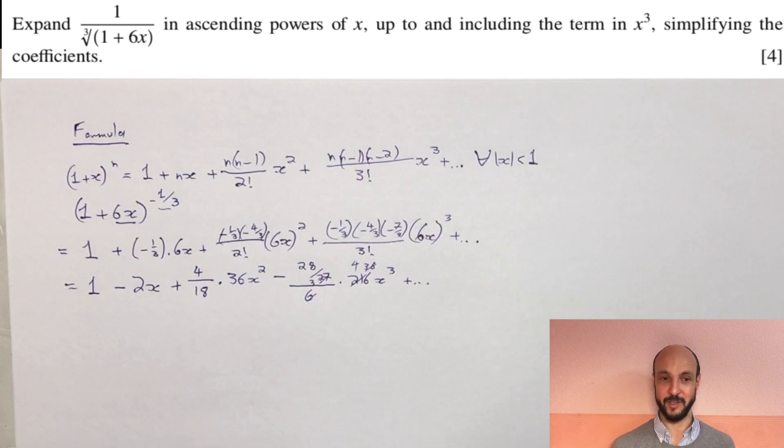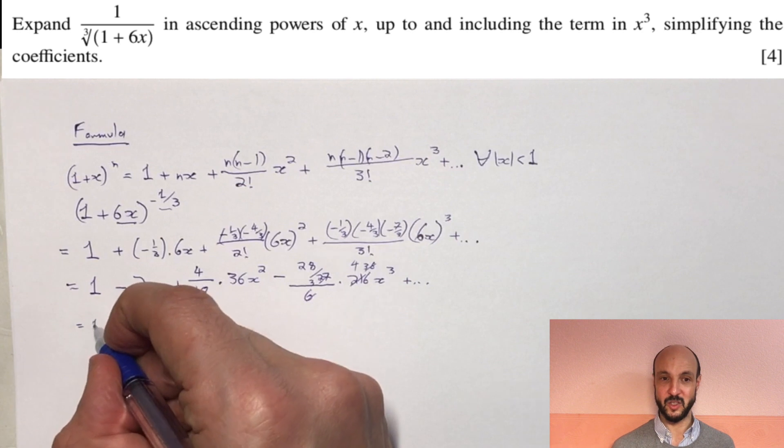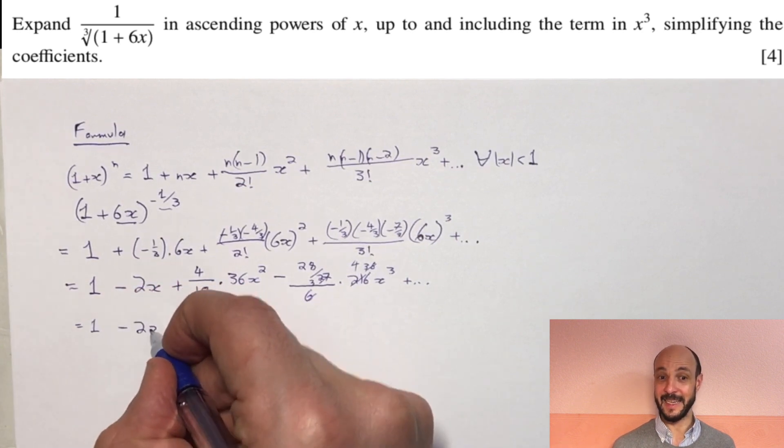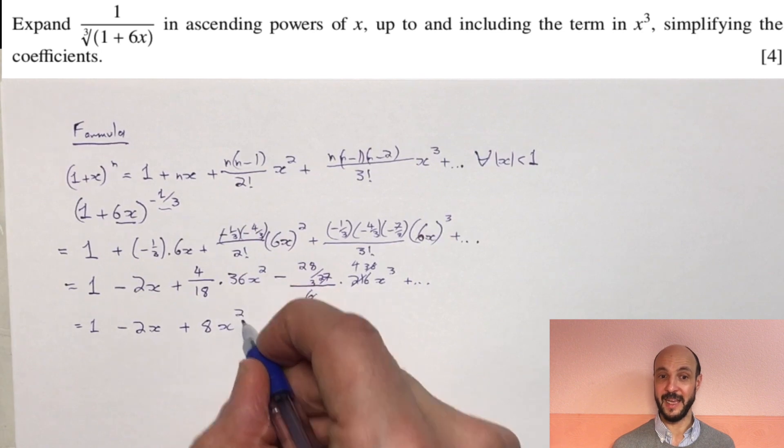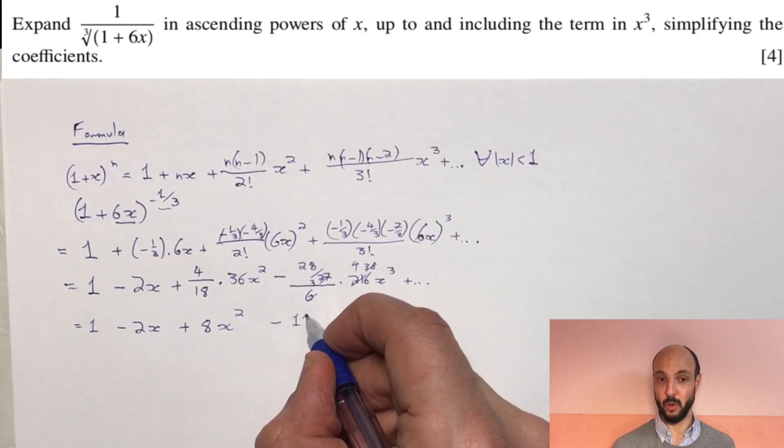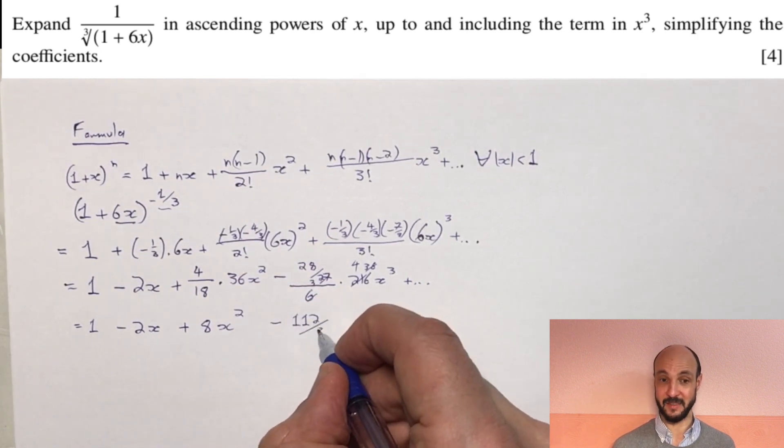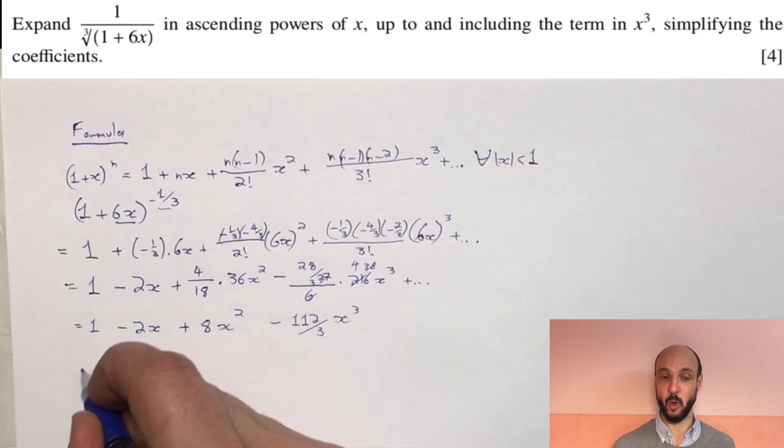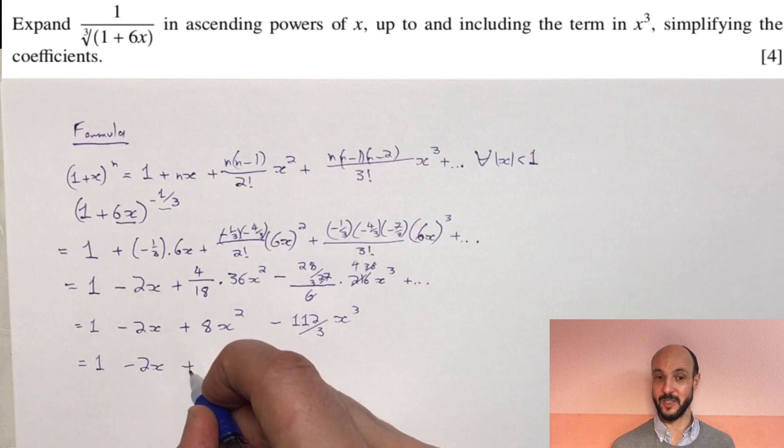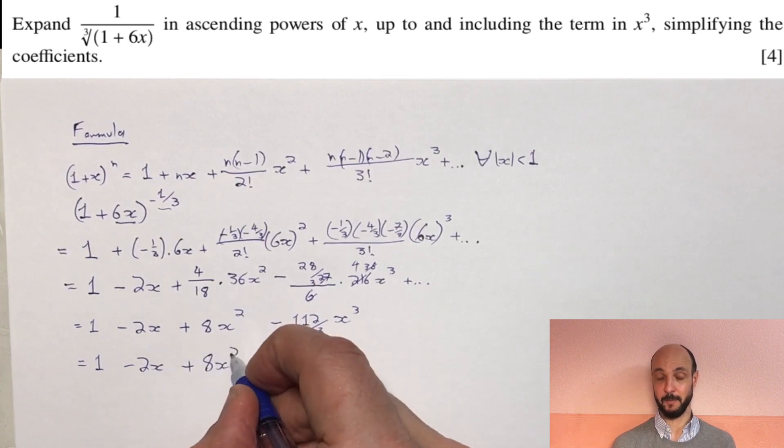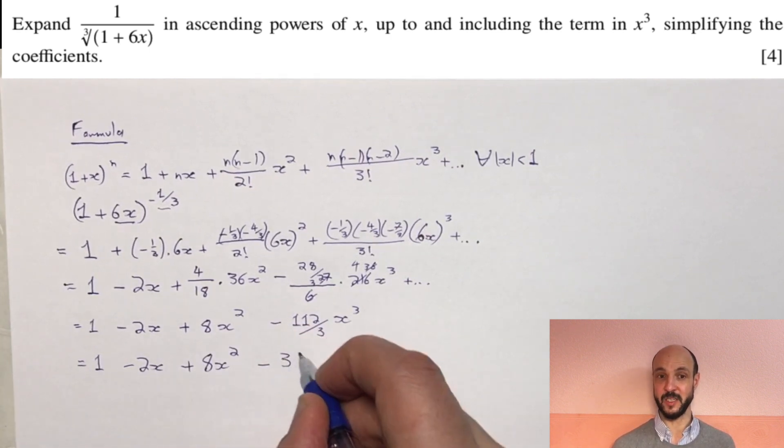So if we then read across our terms, we've got 1 minus 2x plus 8x squared minus 112 over 3x cubed. Or if we want to put that as a mixed fraction at the end there, that's 1 minus 2x plus 8x squared minus 37 and a third x cubed plus all the remaining terms that we don't need for our answer.